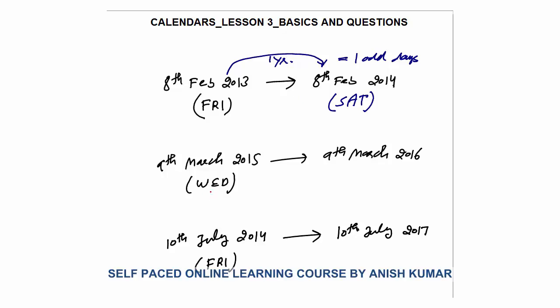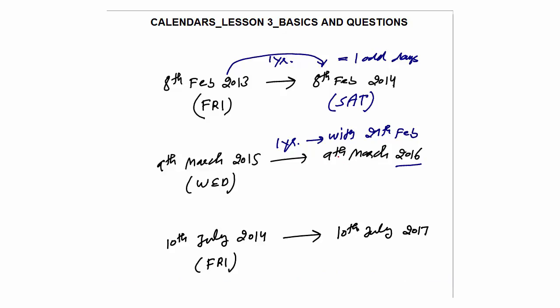Second case: 9th March 2015 to 9th March 2016 — one year gap. Now a twist: one year gap with 29th February in between. Since 2016 is a leap year, there will be 29th February 2016. So whenever 29th February comes there is one extra odd day apart from the one odd day we already have. So 9th March 2015 to 9th March 2016 → total 2 odd days. If it was Wednesday, Wednesday plus 2 = Thursday, Friday. So Friday is the answer.